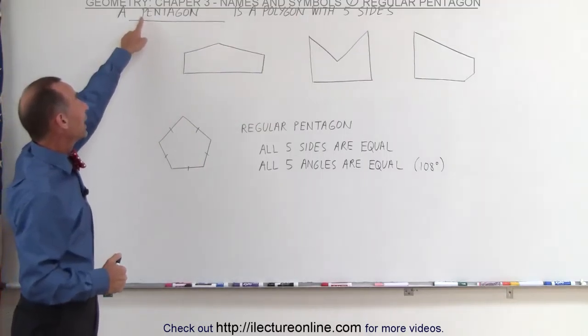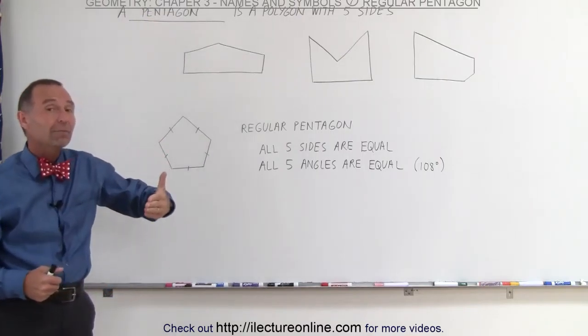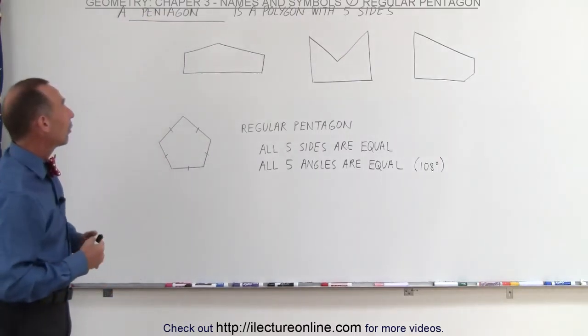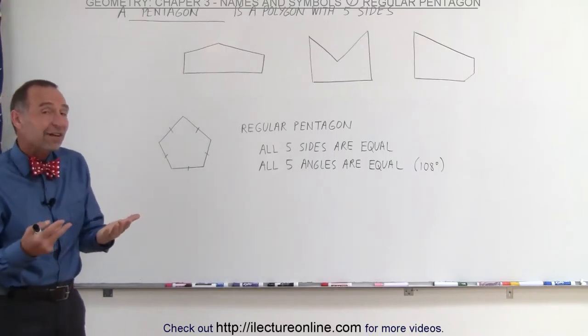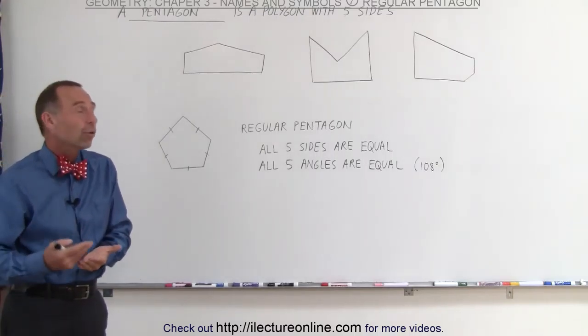In this case, a pentagon, pen means five, hexagon means six. So a pentagon means that it has five sides, a hexagon, six sides, and so forth.